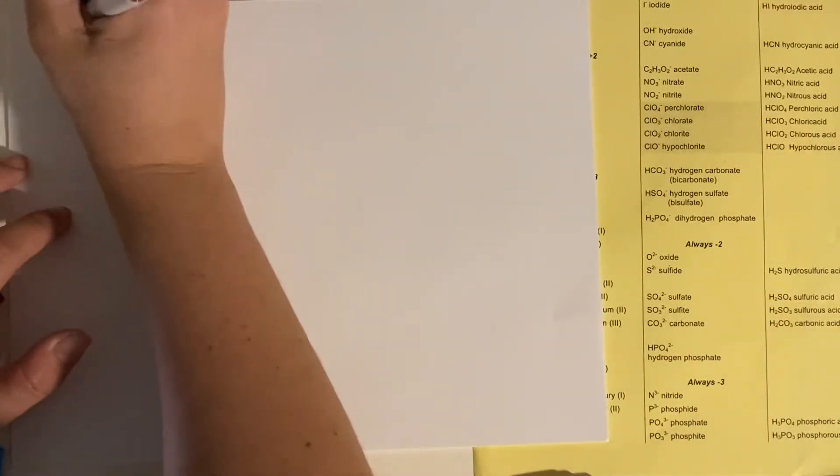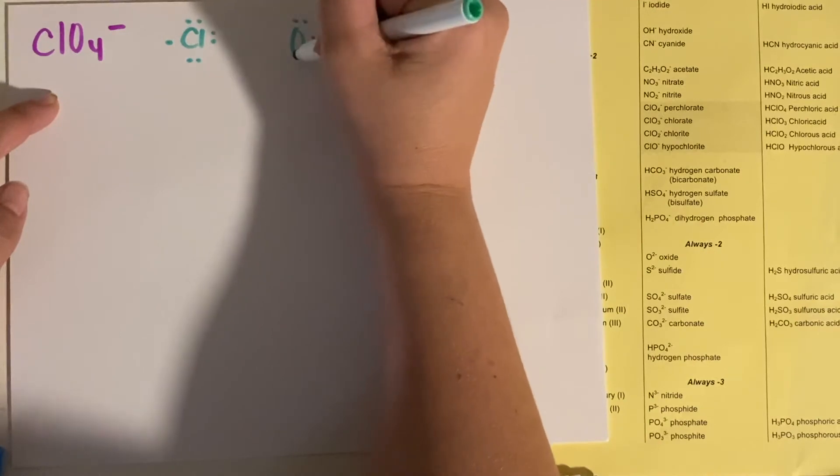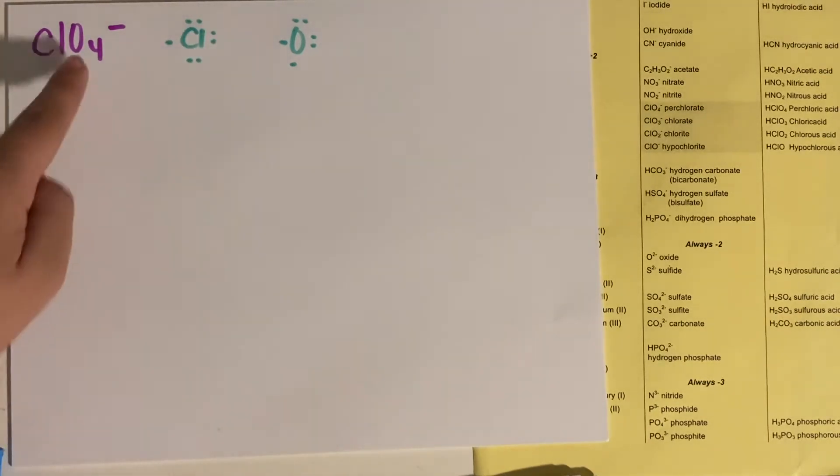Okay, so we have ClO4 minus. Now, if you were trying to figure out what in the heck to do for this, chlorine has one single. Oxygen has two singles. So chlorine only wants to make one bond. Oxygen wants to make two bonds. How in the heck are we going to get one chlorine and four oxygens?